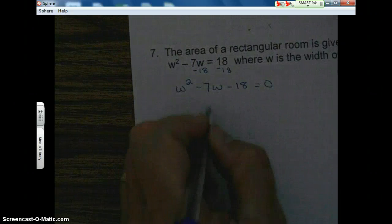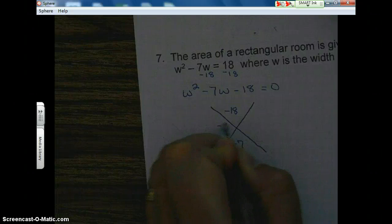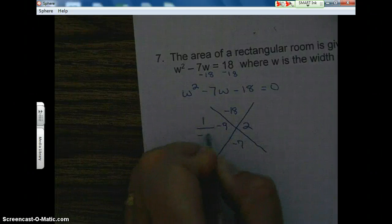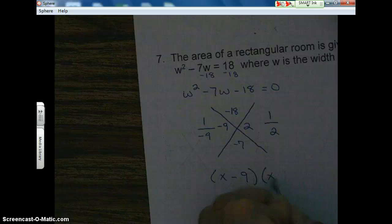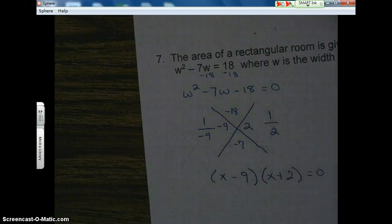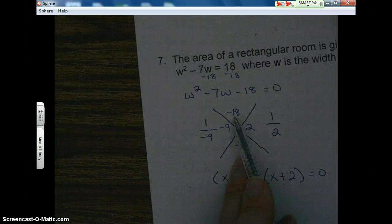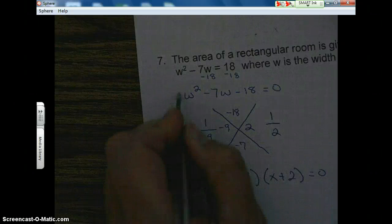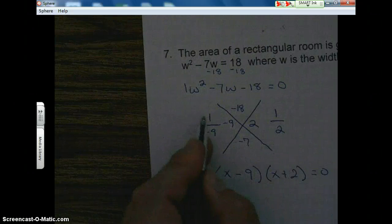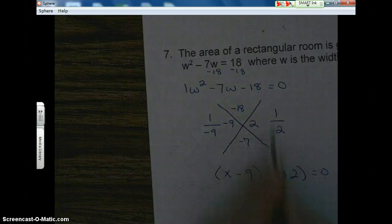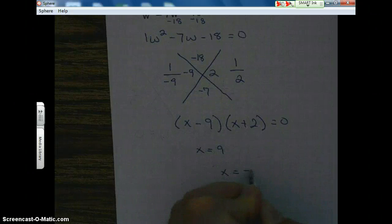I'm going to factor it. Don't you wish you could do factoring that quickly? Negative two times two, negative nine plus two. The a value over the factor, the a value over the factor. 1x minus 9, 1x plus 2. x equals 9, x equals negative 2. Now, it says,